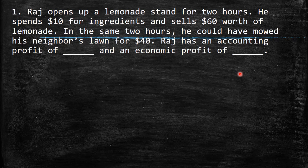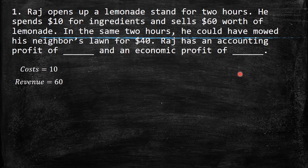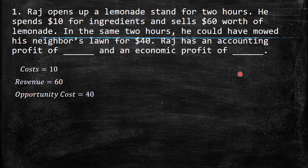The first question says: Rak opens up a lemonade stand for 2 hours. He spends $10 for ingredients, so the cost of this person is about $10. He sells $60 worth of lemonade, so this is going to be the total revenue. In the same 2 hours he could have mowed his neighbor's lawn for $40. So automatically we understand this is an opportunity cost, because instead of mowing his neighbor's lawn, he is preparing lemonade.